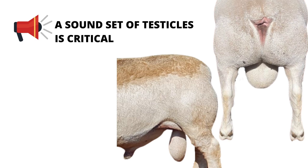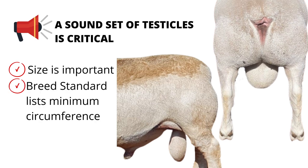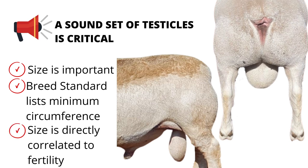And then a sound set of testicles is absolutely critical. Size is important and we have breed standards that lay out the minimum sizes of the circumference of the scrotum at certain ages. A ram lamb must be a minimum of 29 cm. A two-tooth ram should be a minimum of 32 cm. A four-tooth ram should be a minimum of 33 cm. And six-tooth rams and older should be a minimum of 34 cm. The size of the testicles is directly correlated to fertility.